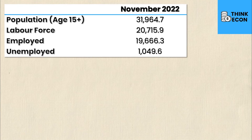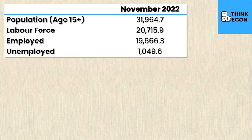I've collected all the data for November of 2022. The population — worth noting — is the population age 15 plus, known as the working age population in Canada. The labour force is the sum of all employed and unemployed people. All of these numbers are in terms of thousands, so if you multiplied them by 1,000 that would give you the actual values. The working age population of Canada is not 31,964.7 but rather 31.96 million.